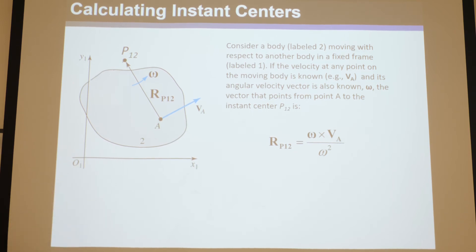So that's really useful to know. So basically, you just need to know the angular velocity of a body, and the velocity of one point on that body, the linear velocity of one point on that body, and using this equation, it'll tell you where its instant center is.